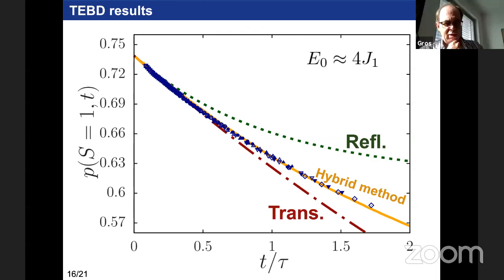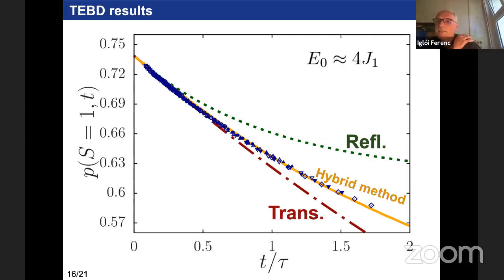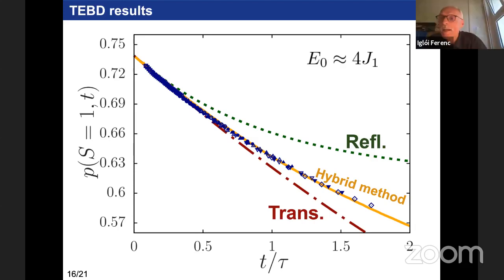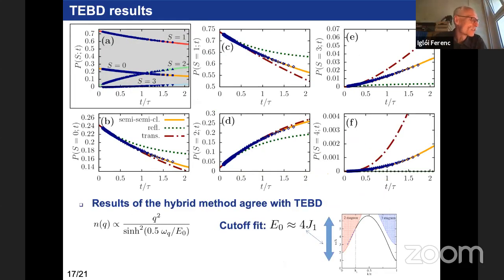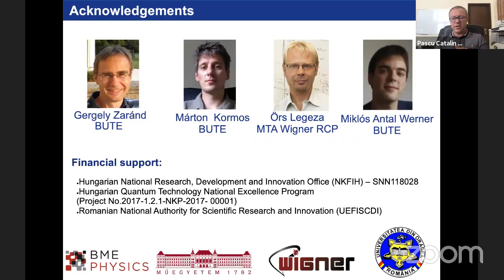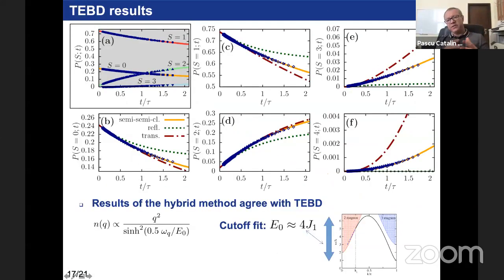Another question: there is a version of the spin-1 chain which is exactly solvable — a dimerized version. You can use Bethe ansatz to get the ground state, but once you quench and look at excitations and the probability distribution for the spin, it is hard to do exactly. One more question: can you also study the dynamical entropy? Yes, we did that, though results were not presented.